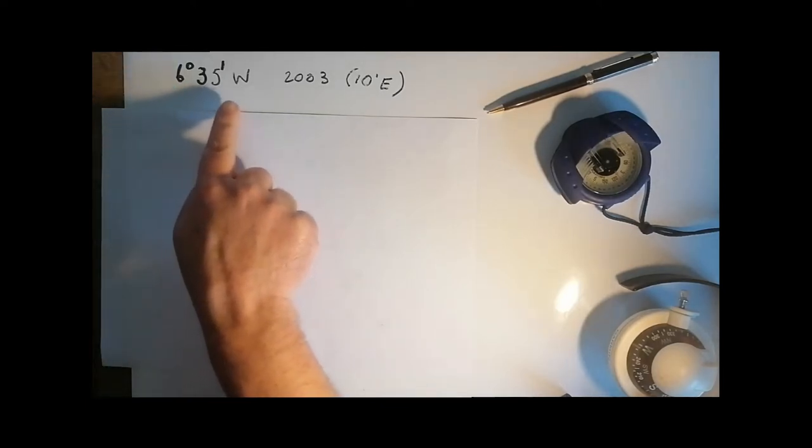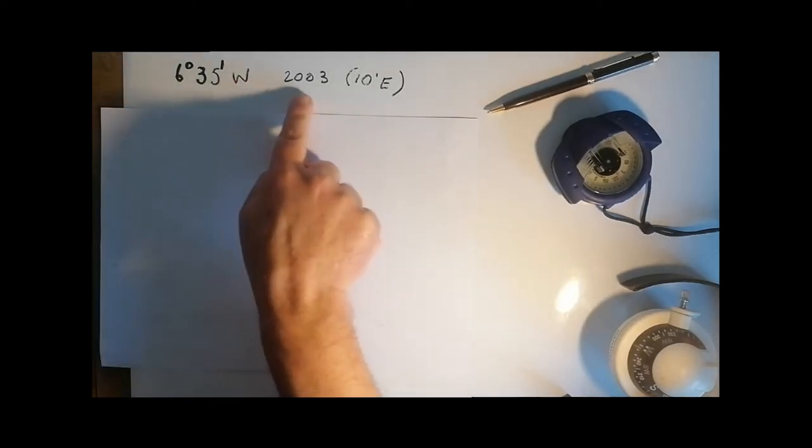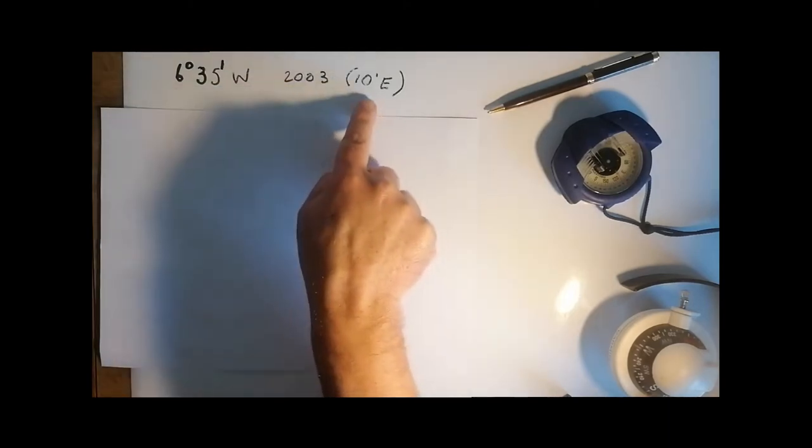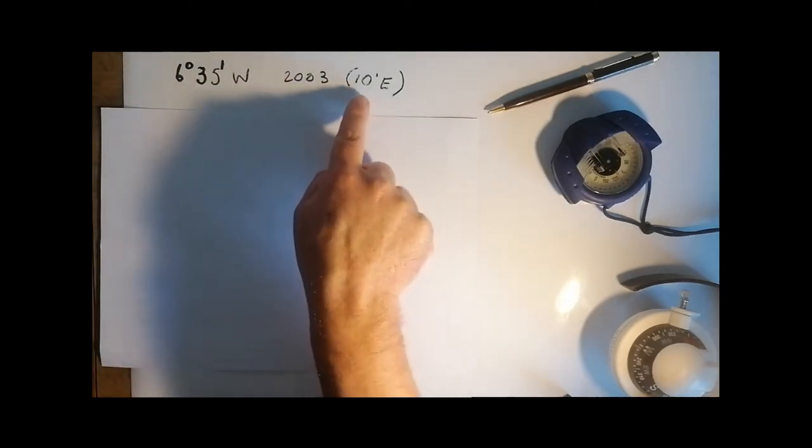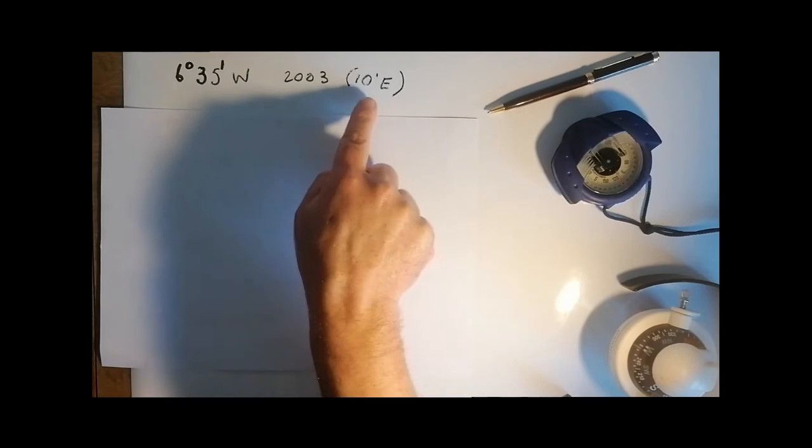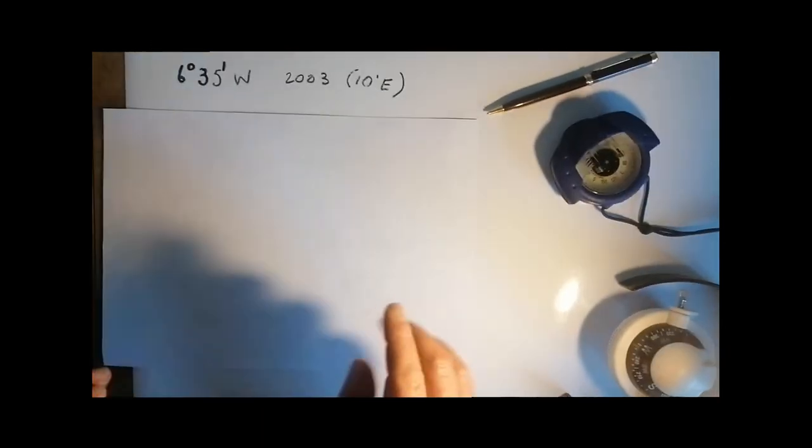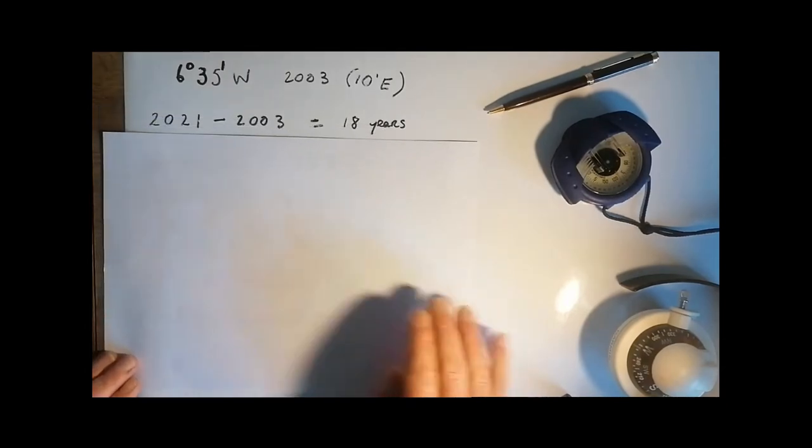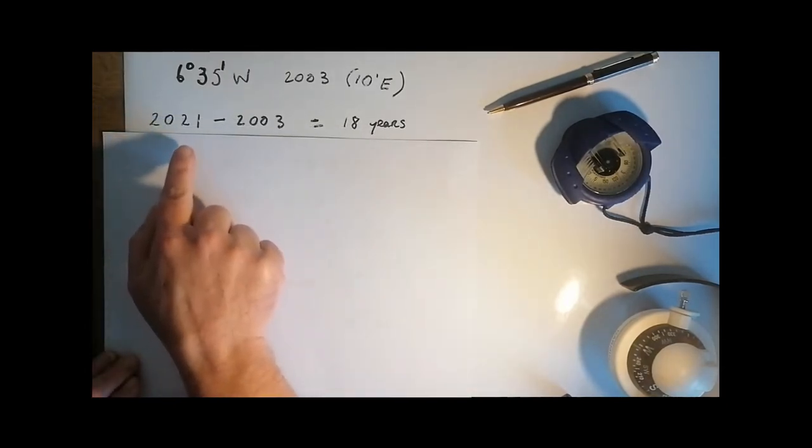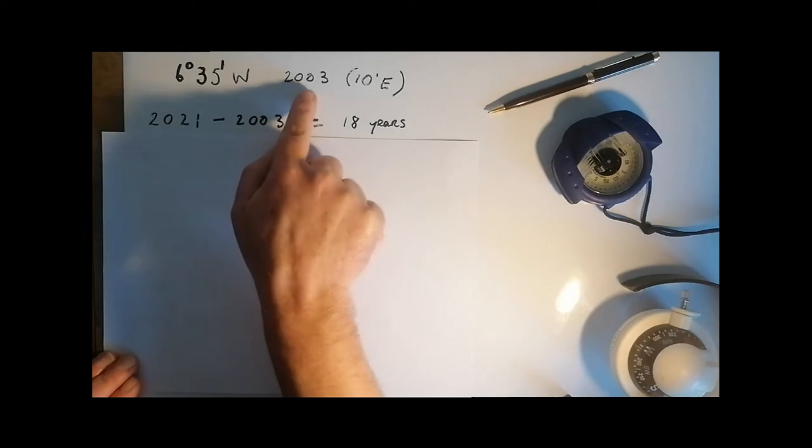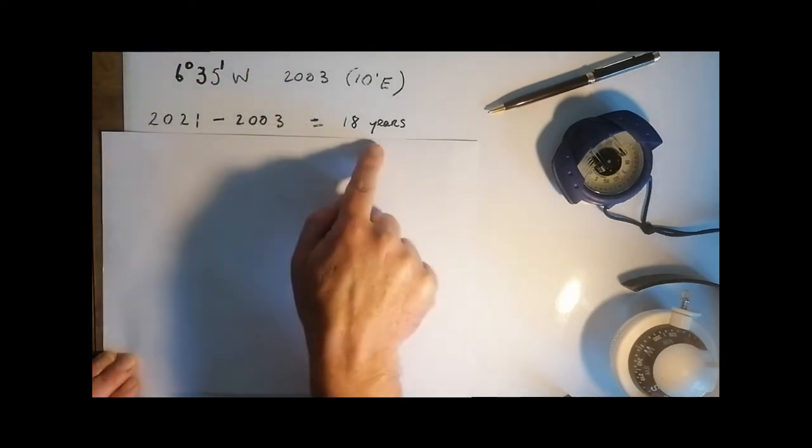To use this information that we get from the compass rows: 6 degrees, 35 minutes west in 2003, with an annual decrease of 10 minutes to the east. Given that the year is 2021, the original information is 2003, that's 18 years.